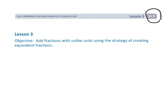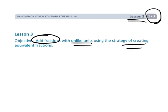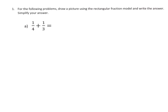This is fifth grade module 3, lesson 3, and we're going to be adding fractions with unlike denominators. We're going to use the area model as our strategy for finding equivalent fractions and our common denominator.